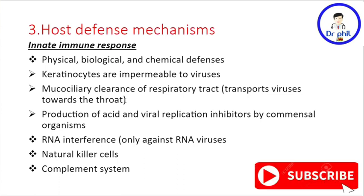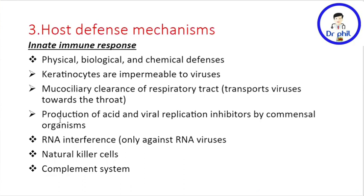There is also production of acid and viral replication inhibitors by commensal organisms. Our bodies also have a mechanism of RNA interference, but this only works against RNA viruses. We also have natural killer cells, which are still part of the innate immune response, as well as the complement system — a group of proteins synthesized by the liver, named C1 through C9.